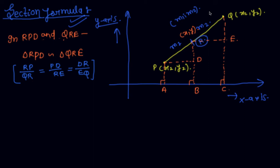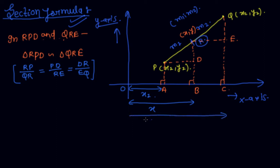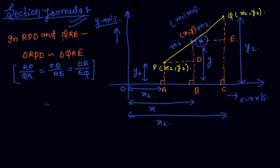Before finding these quantities, note that O is the origin. If the coordinates of point P are (x1, y1), then OA = x1. OB = x and OC = x2. The vertical distance AP = y1, BR = y, and QC = y2. Now I find these individual quantities.